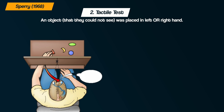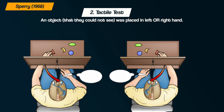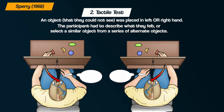In the tactile test — tactile meaning touch — an object was placed in either the patient's left hand, processed by the right hemisphere, or their right hand, processed by the left hemisphere. They had to either describe what they felt or select a similar object from a set of alternatives. If they held the object in their right hand, going to the left hemisphere, they could describe it. If they held it in their left hand, going to the right hemisphere, they could not describe what they felt.